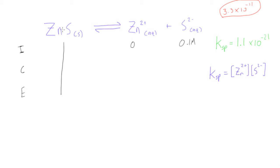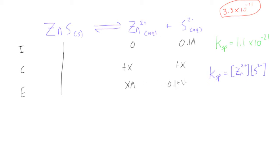Once we drop this in, we're going to get some change. Remember the stoichiometric coefficients are 1 and 1, so we have plus x for both. Our equilibrium concentration of zinc ions will be x, and our equilibrium concentration of sulfide ions will be 0.1 plus x molar.